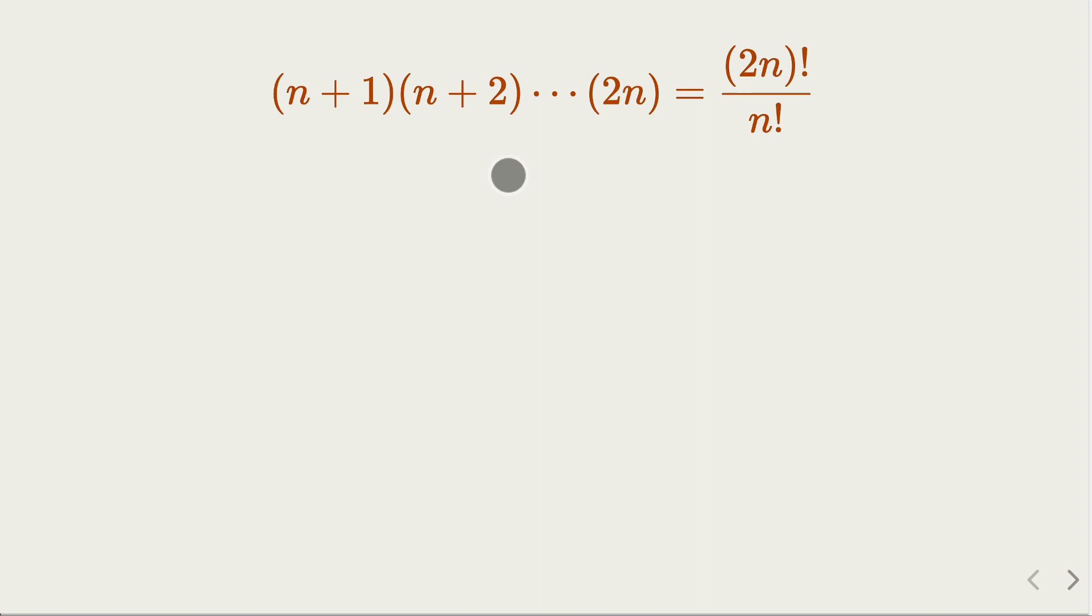So what is 2n factorial? Now for numbers from 1 to 2n, we can group the odd numbers and even numbers together. So for the odd numbers...